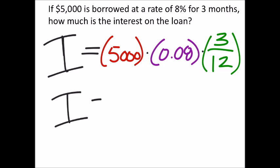So I've got an interest, which is, I'm just going to plug all this into my calculator. 5,000 times 0.08 times 3, divided by 12, and I get exactly $100.